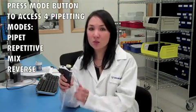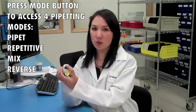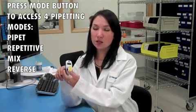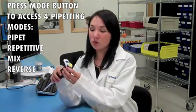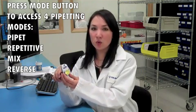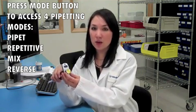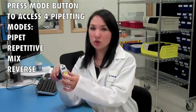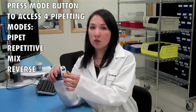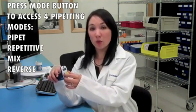The Pipetman M is also an extremely versatile pipette. It has four different pipetting modes, so you're essentially getting four pipettes in one. To access the modes, you simply click the mode button, and it takes you to a menu. It will first display the mode that you are on, which is the pipette mode, and then as you turn the volume button, it will cycle through the different modes.